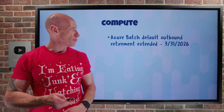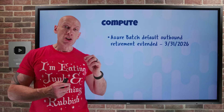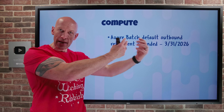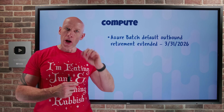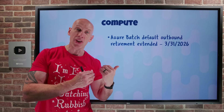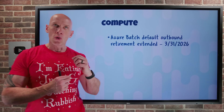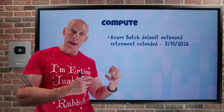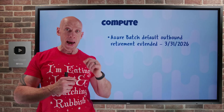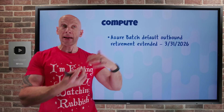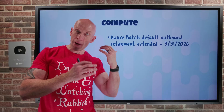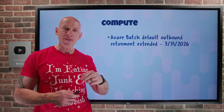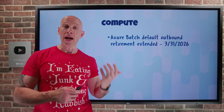On to what's new on the compute side. Azure Batch has extended the time that default outbound access — i.e., to the Internet — will be available. It's been extended to March 31st, 2026, instead of the previous September 30th, 2025. Remember, this is all about that default access to the Internet going away. Instead, you have to add some explicit outbound connectivity — for example, using a gateway, a network virtual appliance, and user-defined routing. There are other methods available, but that default egress to the Internet is going away. Make sure you do that before end of March 2026.